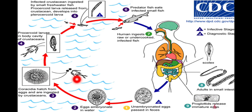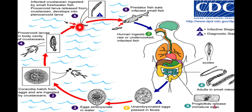These coracidia larvae are ingested by small fresh water crustaceans, which feed on the larvae of D. latum present in the fresh water. Inside the body cavity of the crustaceans, the coracidia develop into procercoid larvae. When infected crustaceans are ingested by small fresh water fishes, the procercoid larvae are released from the crustacean and develop into plerocercoid larvae inside the fish.